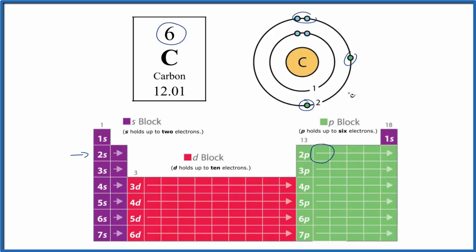So these electrons in the highest energy level, the outer shell here, these are the valence electrons. And they're important because they're the electrons involved in chemical bonds.